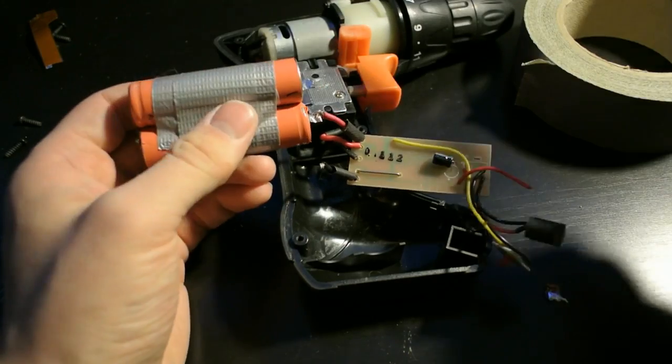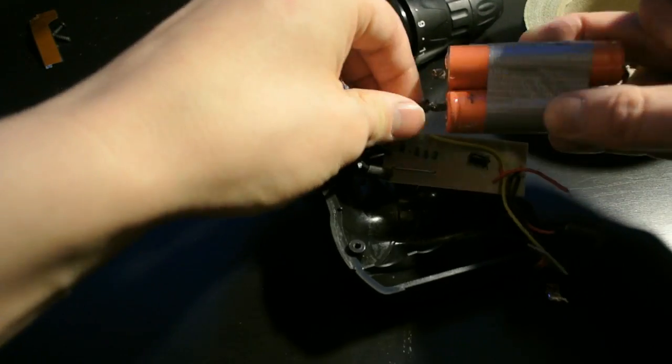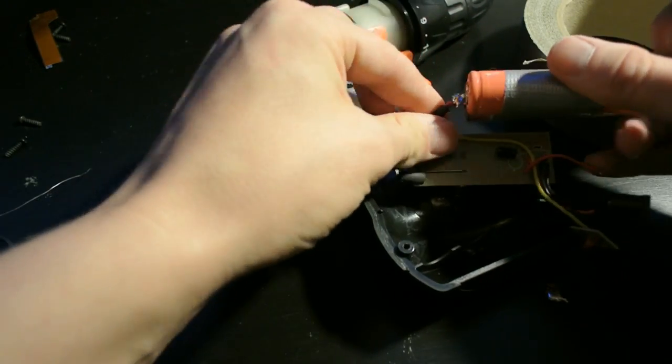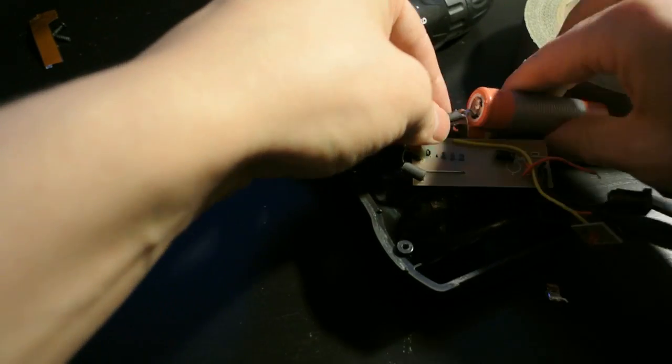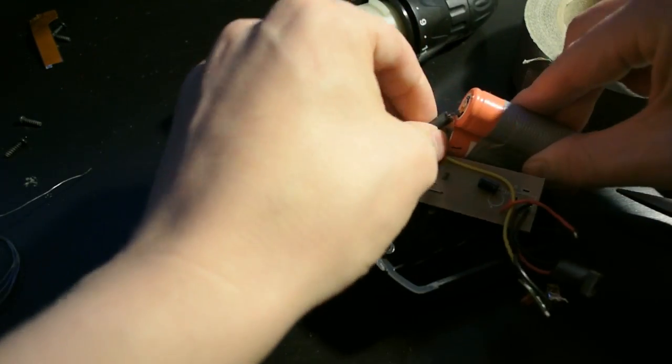And now we get to the point where it was important to mark the polarity of our new cell. Red goes to the positive side and black goes to the negative side. Simple but important to remember because otherwise bad things could happen like rivers turning into blood and knives falling out of the sky.